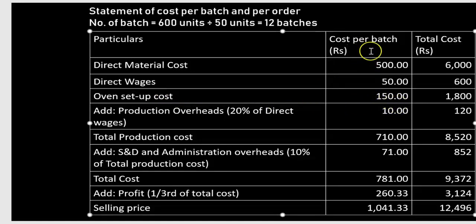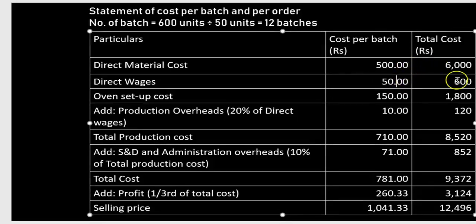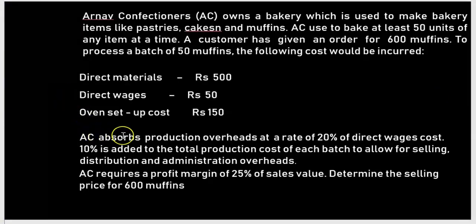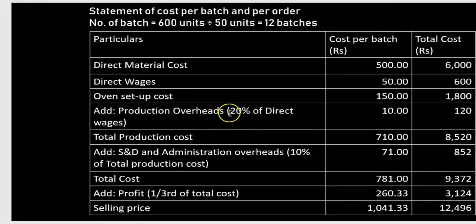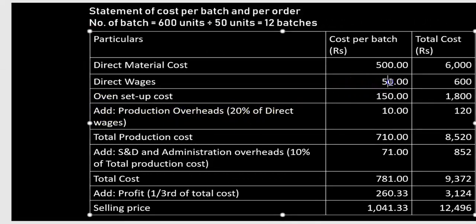To get the total cost, multiply each per-batch cost by 12: 500 × 12 = 6000, 50 × 12 = 600, and 150 × 12 = 1800. Now add production overheads, which are 20% of direct wages. Direct wages is rupees 50, so 50 × 20% = rupees 10 per batch, and 10 × 12 = rupees 120 total.